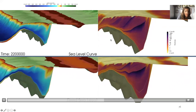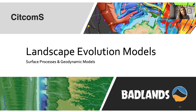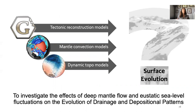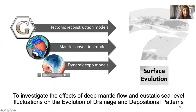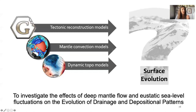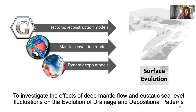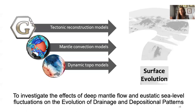You can also look at the influence of sea level on sedimentation and deformation on the margin — here you have a model with a sea level curve and one with a fixed sea level. We also designed another coupling, a one-way coupling this time, between mantle convection models and surface processes models. When you couple tectonic reconstruction models with mantle convection models, you can extract dynamic topography and apply that to surface evolution models. This allows you to investigate the effect of deep mantle flow, eustatic sea level, and climate on the evolution of drainage and deposition patterns of any basin in the world.